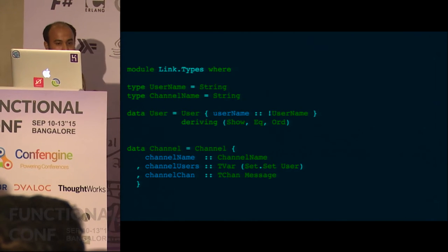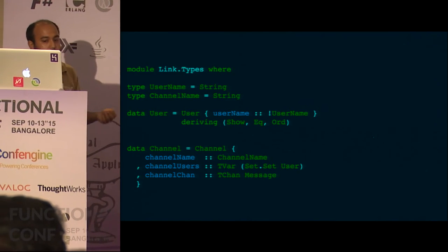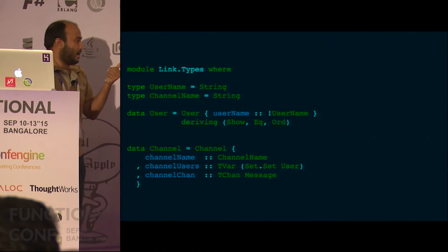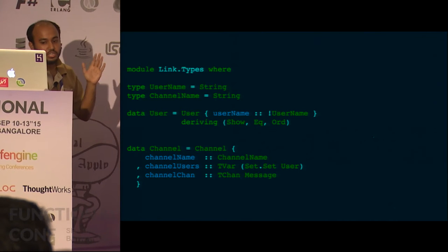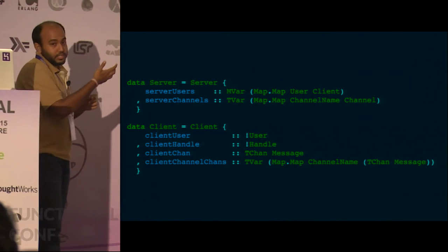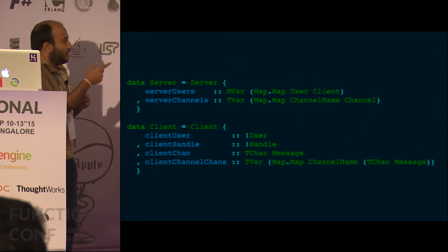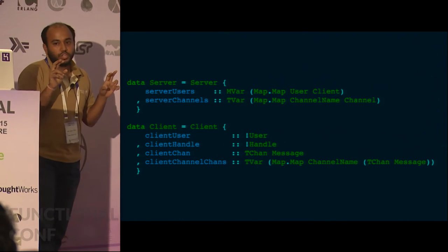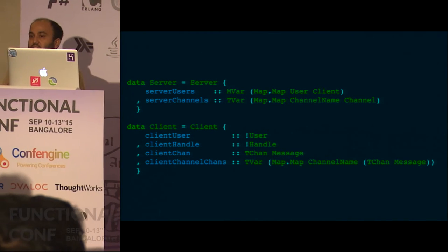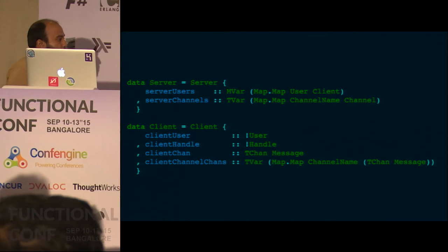Let's see this in actual code. We create a new type called Channel. A Channel has a name, a TVar of a set of users (the users who have joined the channel), and a TChan of Messages. We have moved from Chan to TChan and from MVars to TVars. The Server has been changed to add a map of channels inside a TVar. The Client has been changed: its channel is now a TChan, and it also has a map of channel names to TChans, inside a TVar.